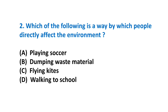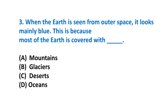Question 2: Which of the following is a way by which people directly affect the environment? A) Playing soccer, B) Dumping waste material, C) Flying kites, or D) Walking to school. Question 3: When the earth is seen from outer space it looks mainly blue. This is because most of the earth is covered with: A) Mountains, B) Glaciers, C) Deserts, or D) Oceans.